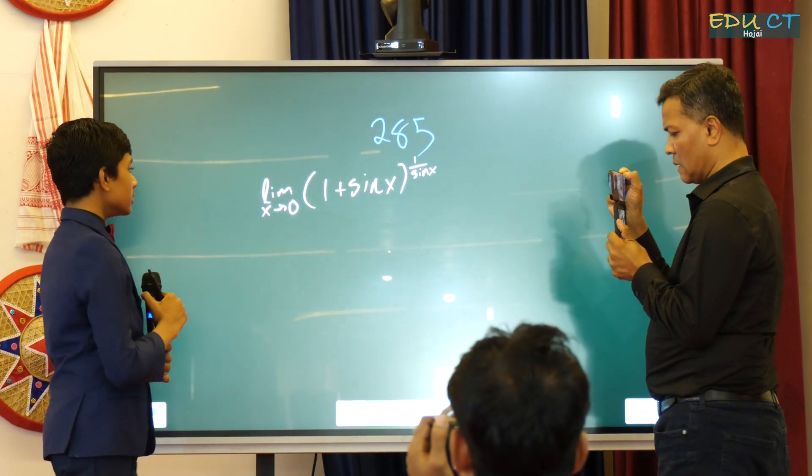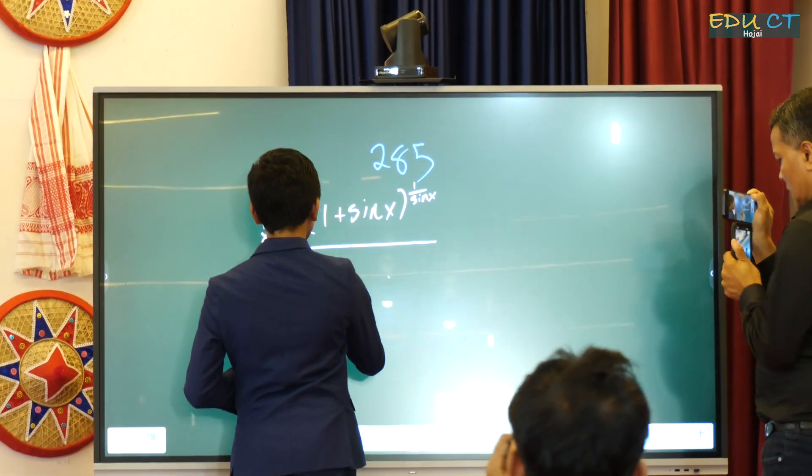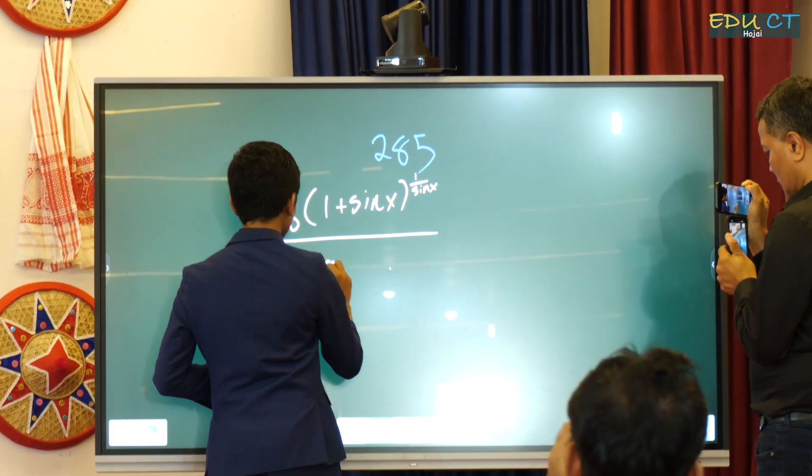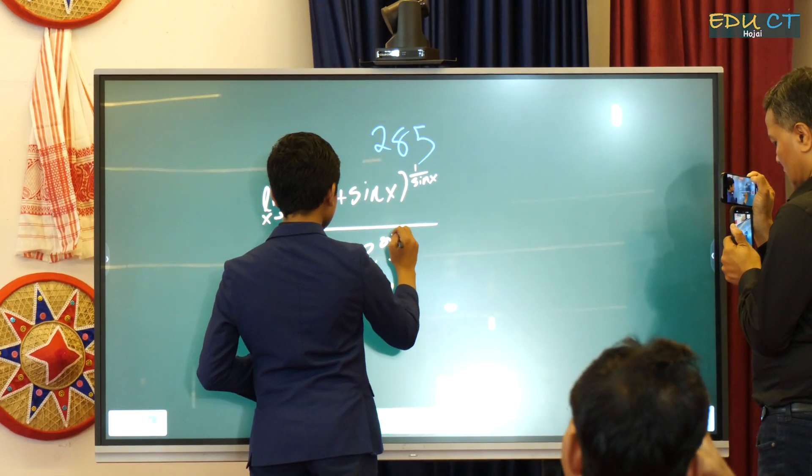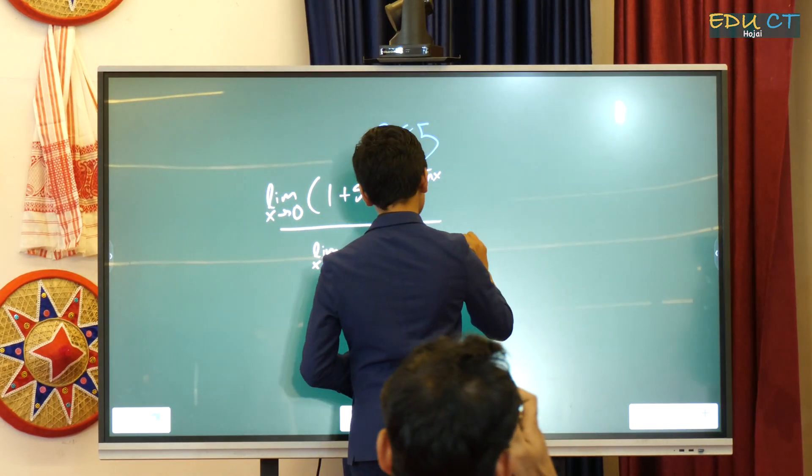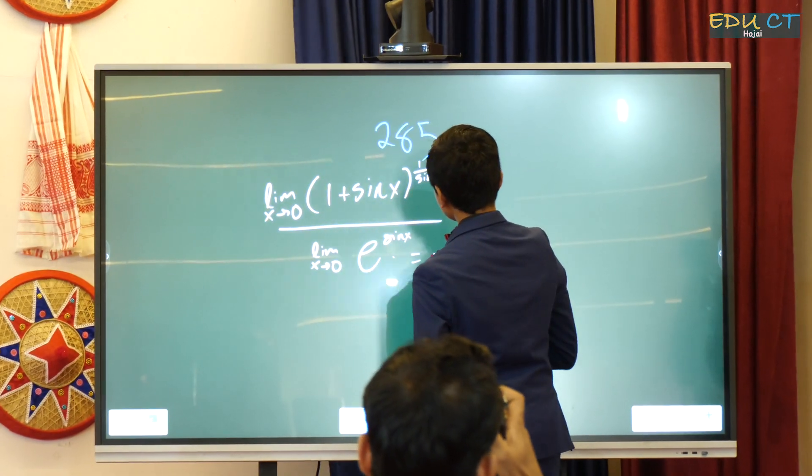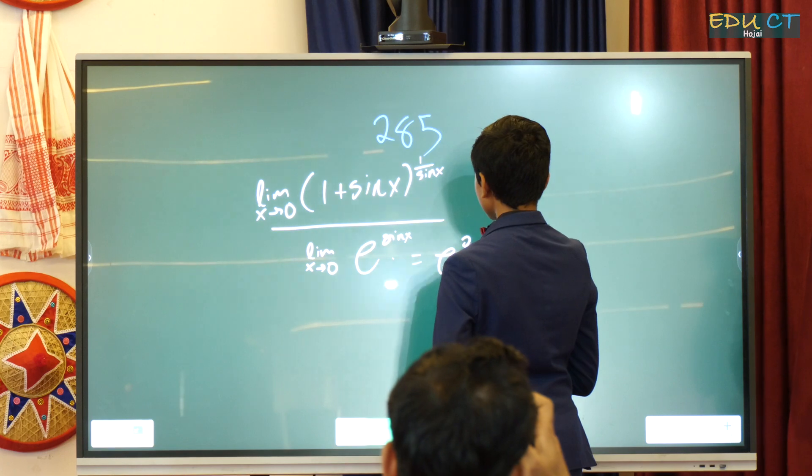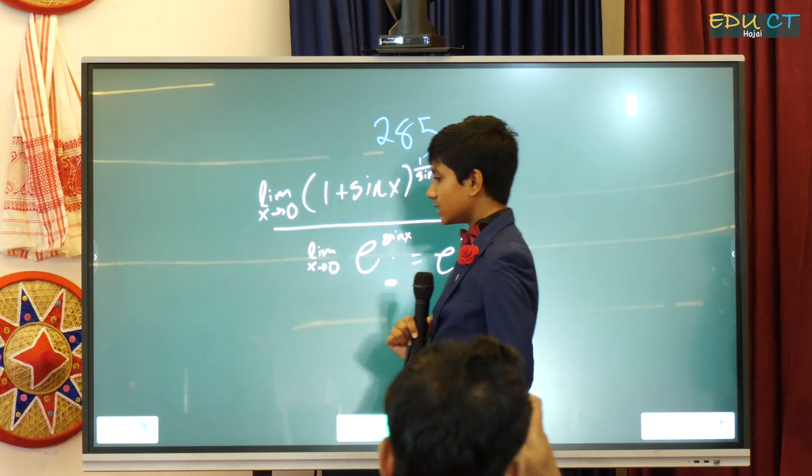Now, if you're pretty astute, you would know this is just equal to the limit as x approaches 0 of e to the sin x, which should just be equal to 1. Because this is going to be e to the 0, which is 1. Is there anything that I'm missing? No. So this should be correct.